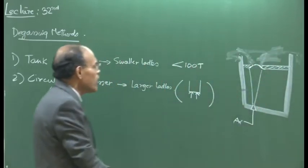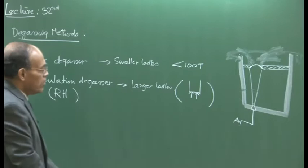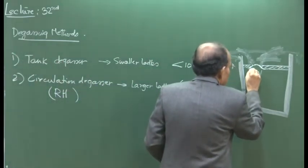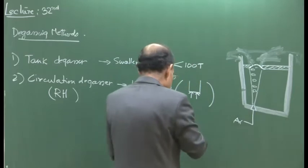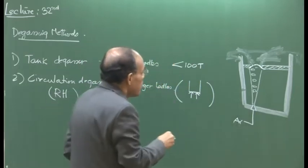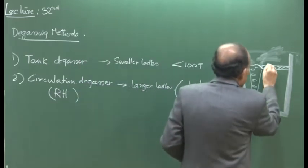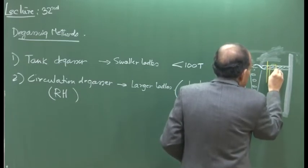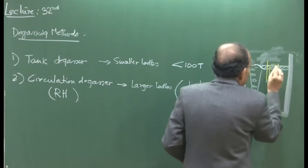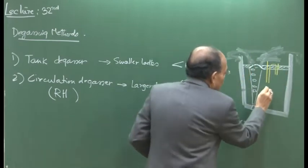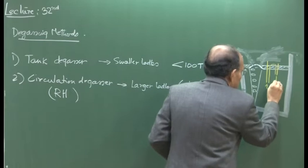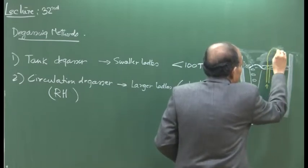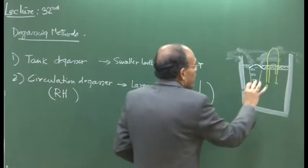In the circulation degassing process, a snorkel is placed inside the system. The snorkel has two legs — one called the up leg and the other the down leg. The container for the vacuum vessel is mounted above, as shown schematically.